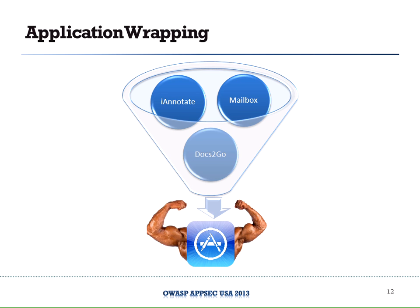Here's a very high-level diagram of how app wrapping works. An organization sees good apps on the App Store — a mailbox application, iAnnotate for PDFs, Docs2Go for Word documents — but they're worried about whether these apps are secure, how they're storing data, and whether they can enforce authentication. So they wrap those apps, enforce the policies they want, and it spits out a brand new secured and locked-down version of that existing app.